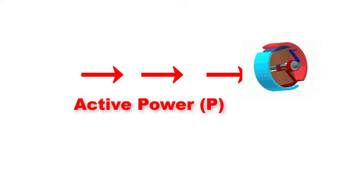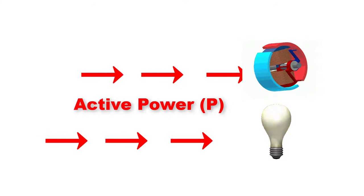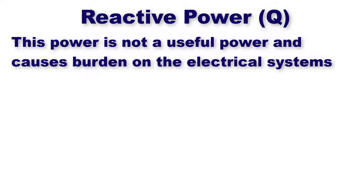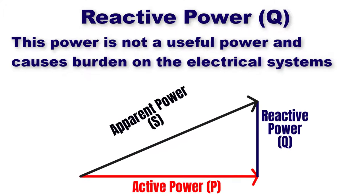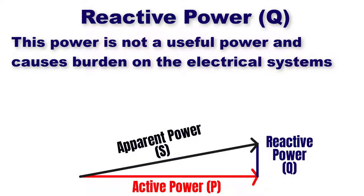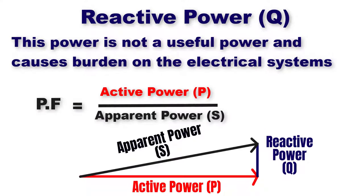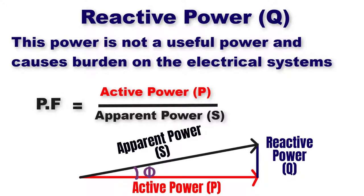Active power is the useful power that helps a motor load to rotate or a lamp to illuminate. But reactive power is not useful power and causes a burden on the system. If we decrease the reactive power, we will decrease the total apparent power — this decrease means we have improved the power factor closer to the value one. The angle between active power and apparent power is called phi, so cosine phi equals the power factor, which equals active power P over apparent power S.